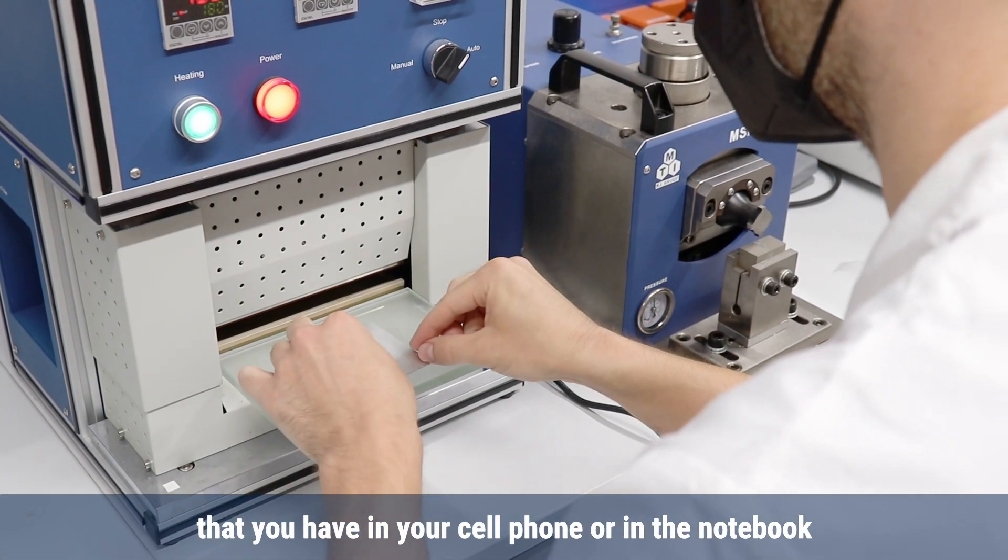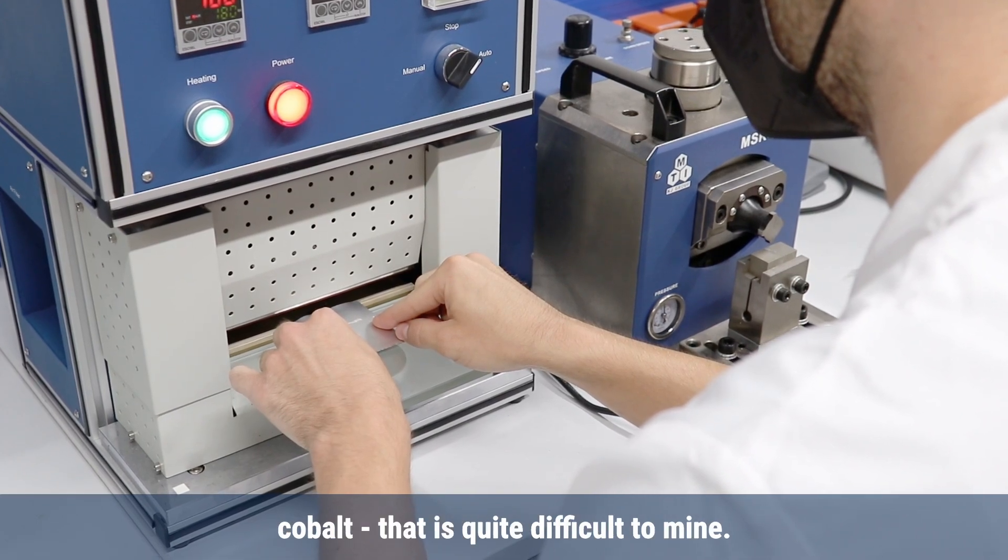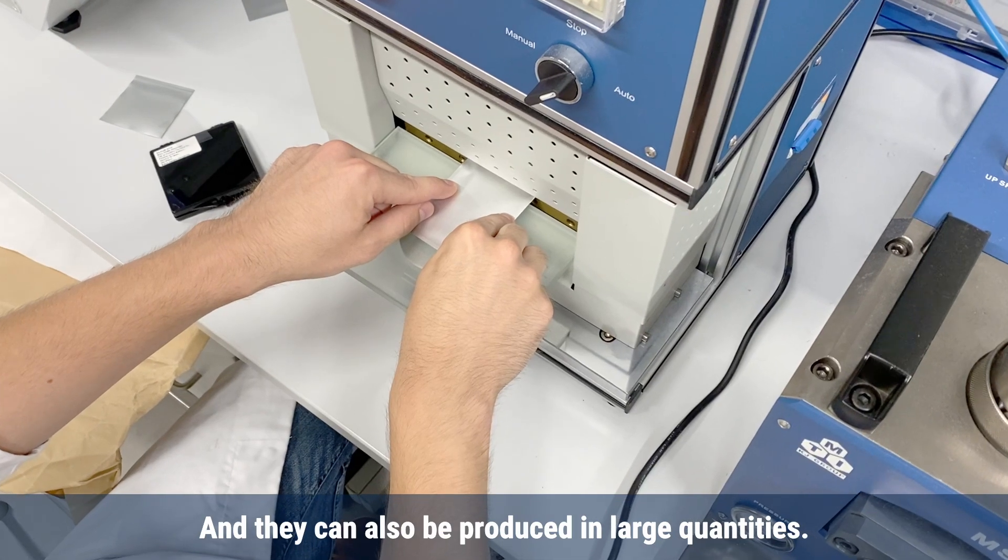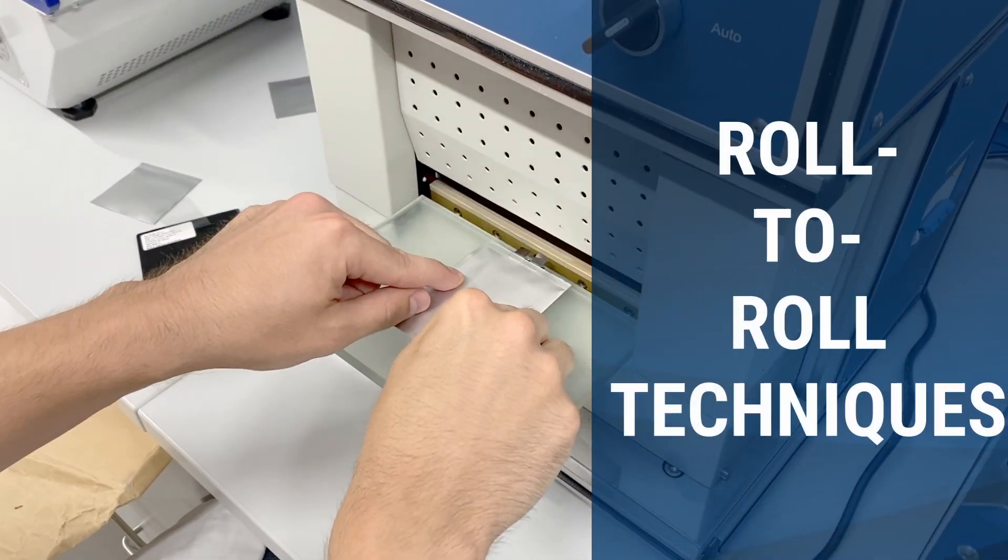For example, lithium-ion batteries that you have in your cell phone or notebook always have lithium that is quite rare, or cobalt that is quite difficult to mine. These batteries can also be produced in large quantities using printing techniques or roll-to-roll techniques.